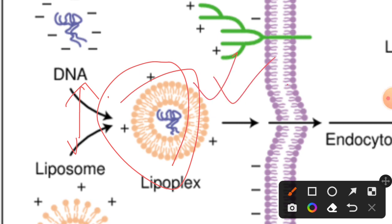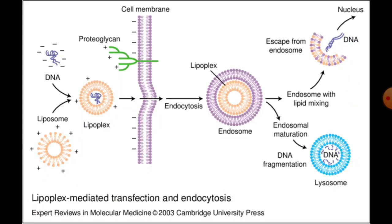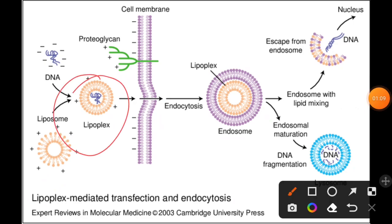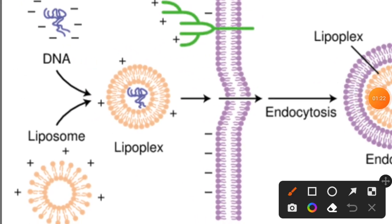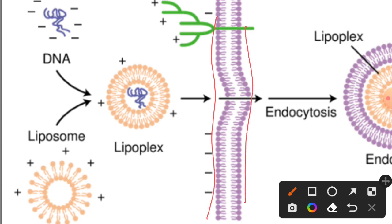The interaction between the liposome and the DNA is an electrostatic interaction, which facilitates the formation of the cationic lipoplex. The host cell easily receives this lipoplex via receptor-mediated endocytosis. However, there is a problem: since the membrane composition is nearly similar for every cell of an organism, and the lipoplex composition is also the same, we do not have something that ensures specificity.